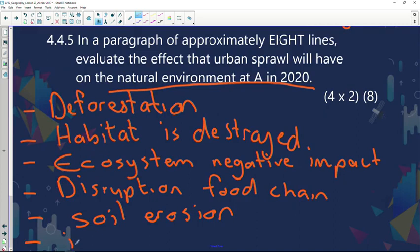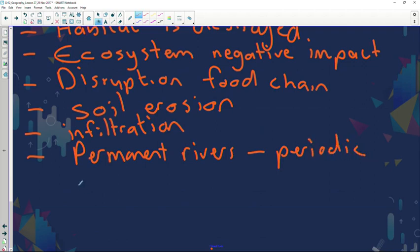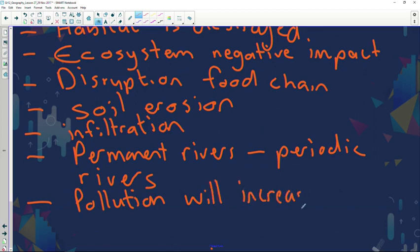There's going to be less infiltration because there's going to be artificial surfaces in the area such as tar road surfaces, same with pavements. And unfortunately, rivers, permanent rivers, will be turned into periodic rivers. And lastly, because of an urban settlement, what do people just tend to do? We tend to pollute. So pollution will increase, not only water pollution but noise pollution as well as air pollution.